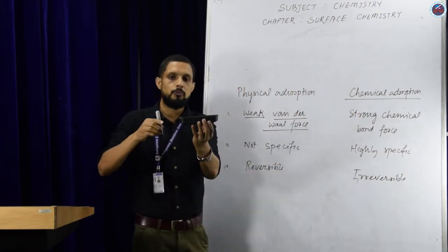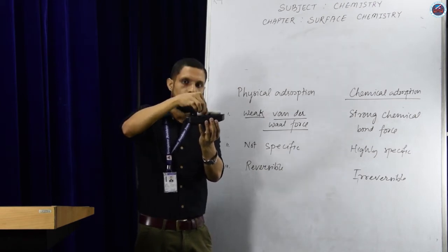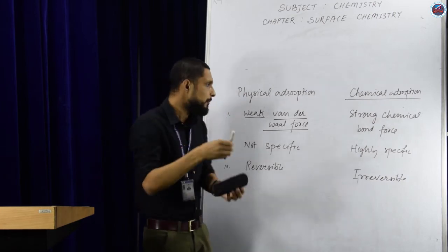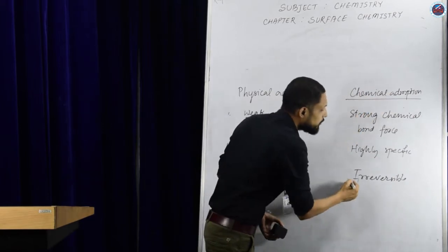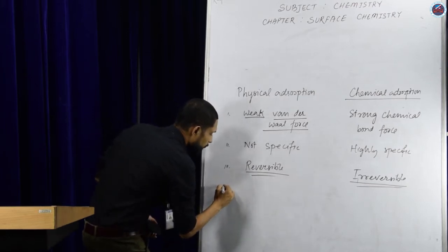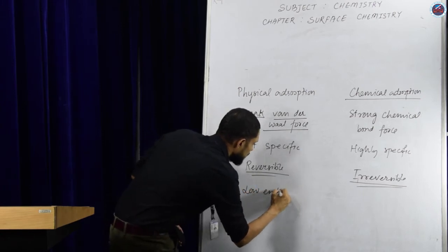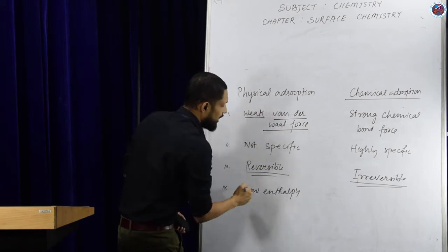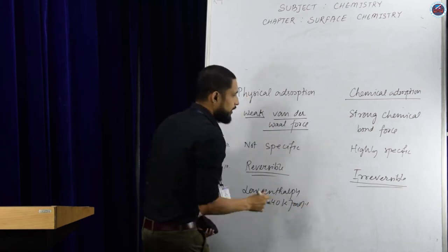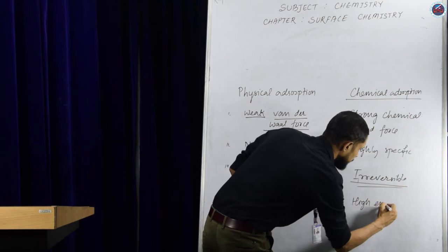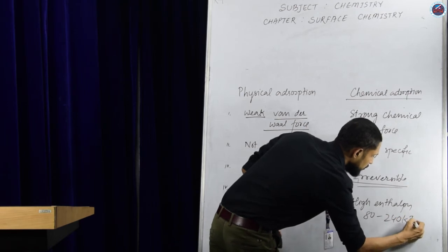Reversible means the adsorbate can undergo adsorption and desorption repeatedly, so the phenomenon is reversible. In chemical adsorption, it is irreversible. Fourth: physical adsorption has low enthalpy of adsorption in the range of 20 to 40 kJ per mol, whereas chemical adsorption has high enthalpy of adsorption in the range of 80 to 240 kJ per mol.